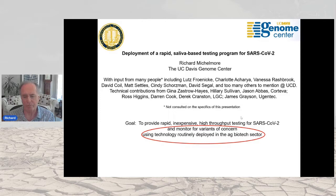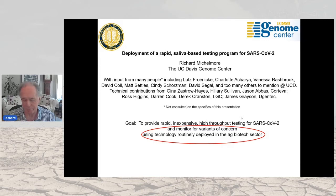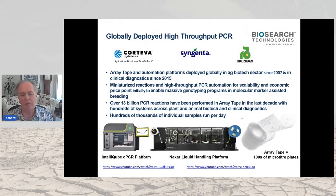I want to segue into what we've done for COVID screening. One reason for discussing this is that we've redeployed technology routinely used in the ag biotech sector — there's also a Corteva connection, as we set this up after consulting with Corteva. I knew there was high-throughput screening technology being used in ag biotech companies: the Nexar liquid handling platform, capable of generating 150,000 data points a day, with some large companies running 10 of these machines, generating millions of data points daily — far exceeding what the medical community was testing for COVID.